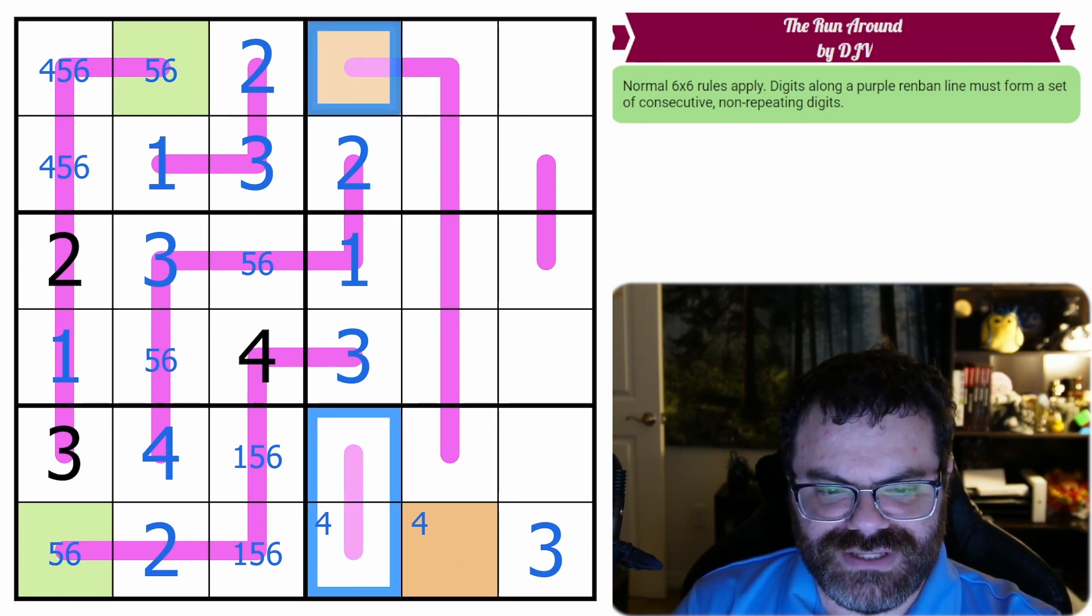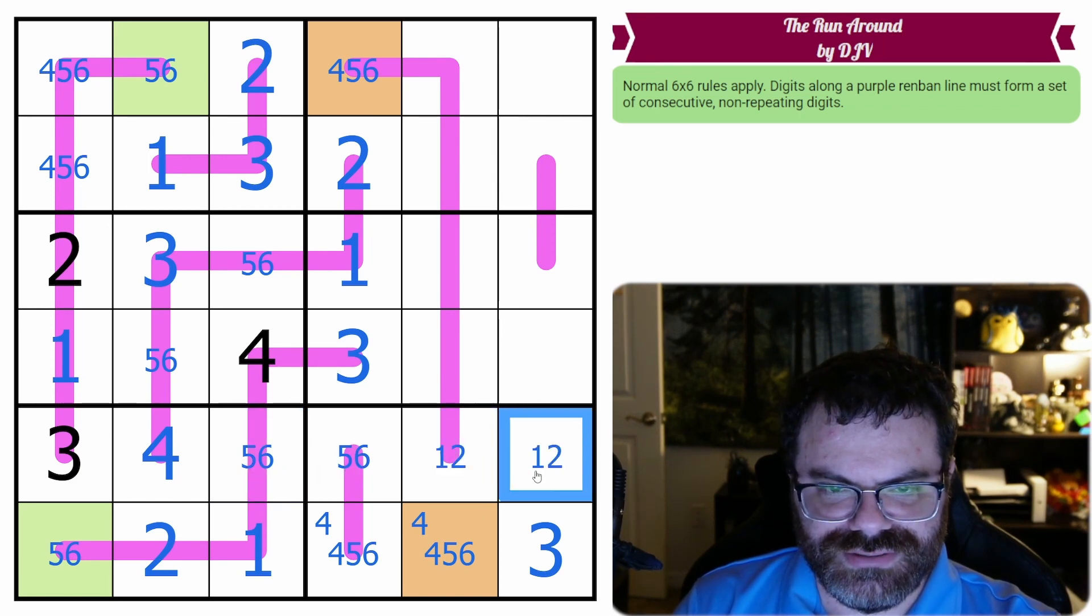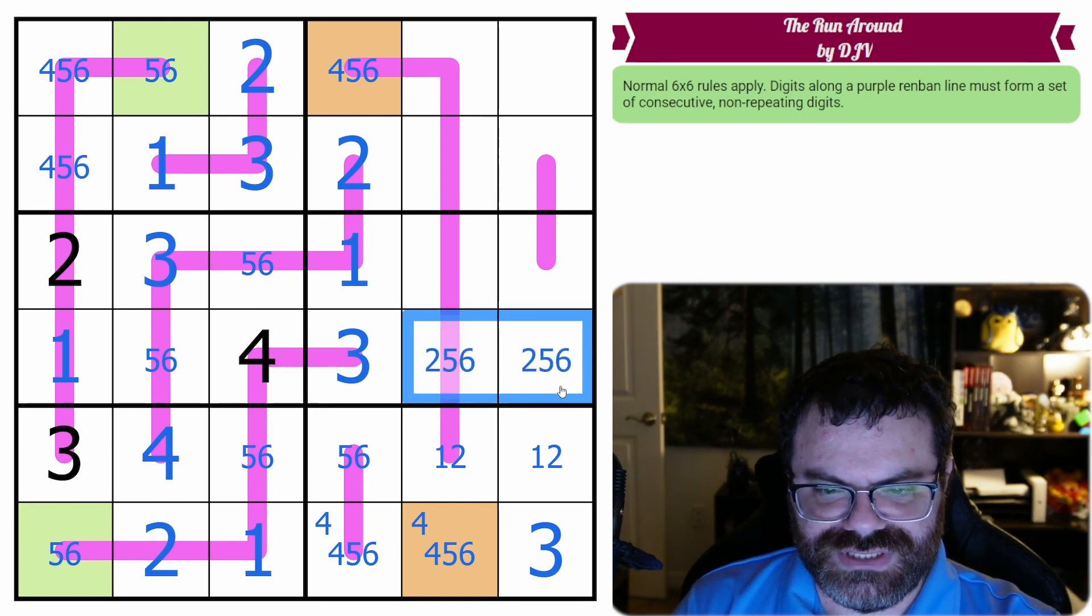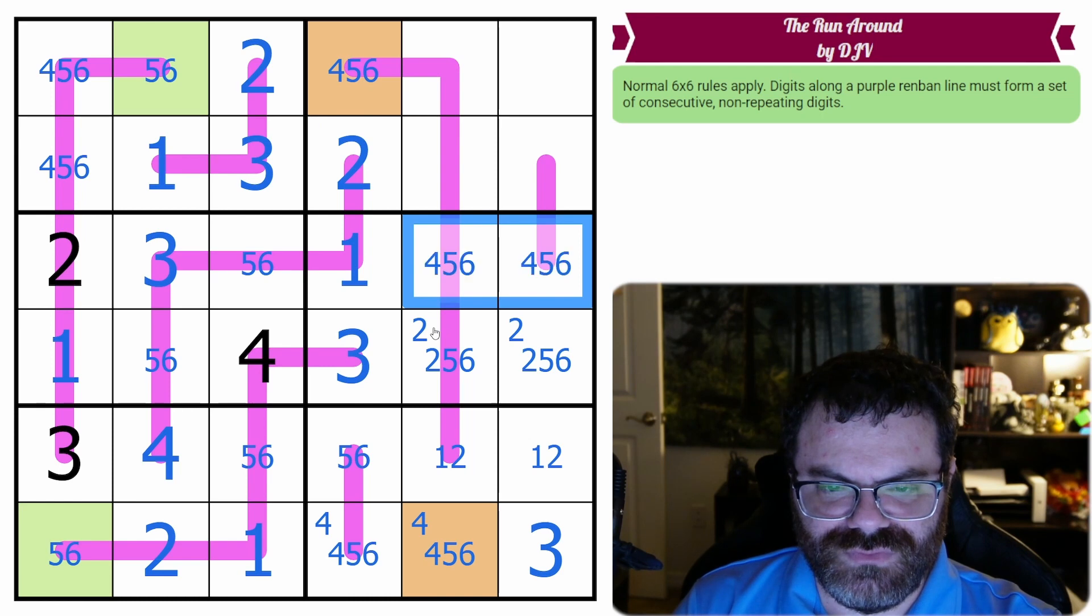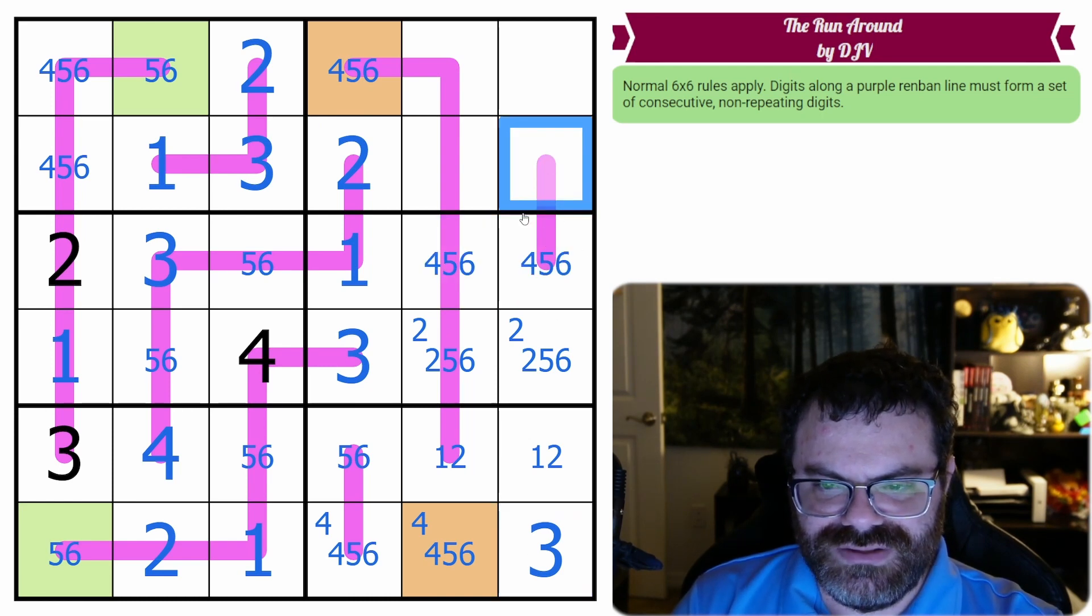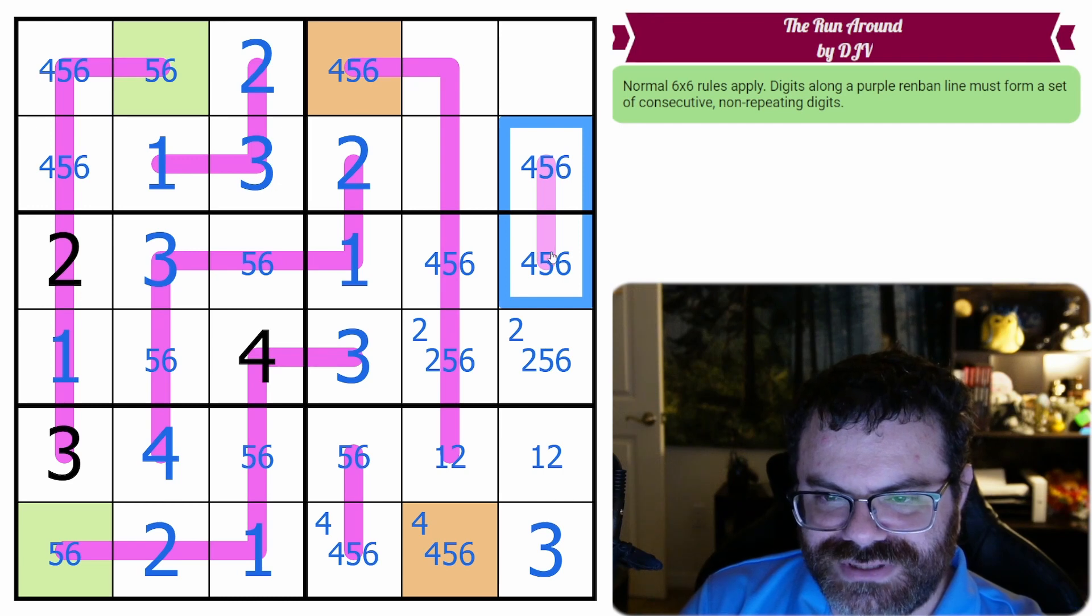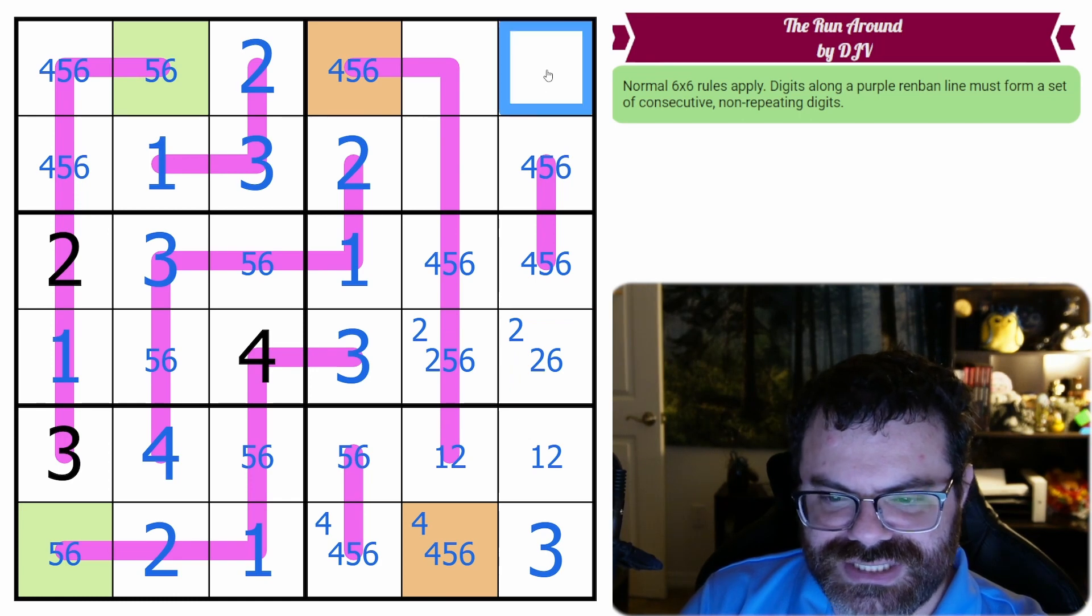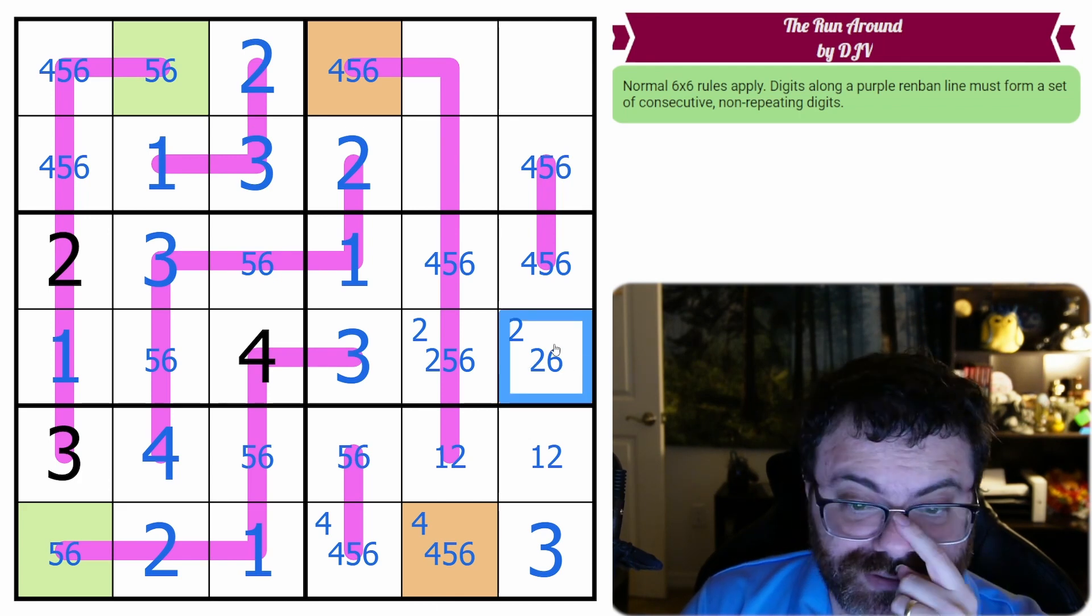These are from 4, 5, 6. So this is the 1 for the row. 5, 6 pair gives us a 1, 2 pair here. These are from 2, 5, 6. The 2 is over here. These are from 4, 5, 6. So this, because they see a 3, they have to stay on the 4, 5, 6 side of the line. Which means one of these is a 5. Because they can't be 4, 6, right? It has to be consecutive. So one of these is a 5, which means this cannot be a 5. It also means this can't be a 5. But I don't know if that does anything. To be fair, I don't know if this does anything either.